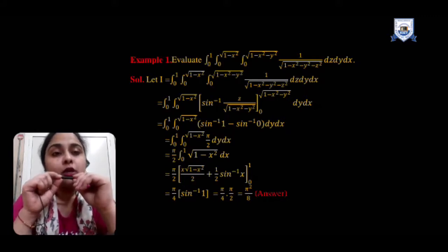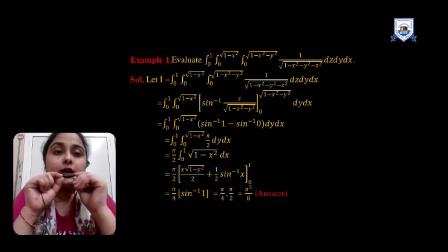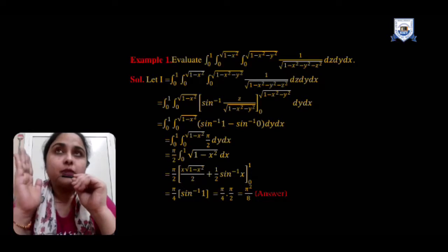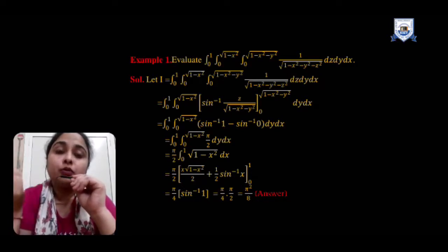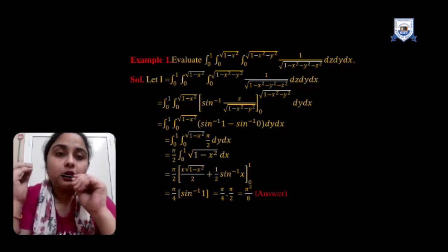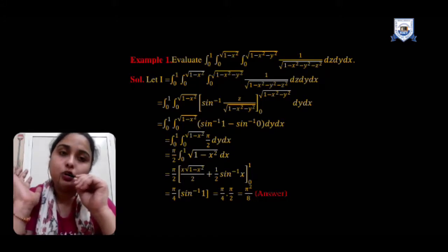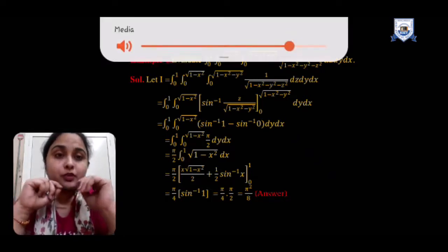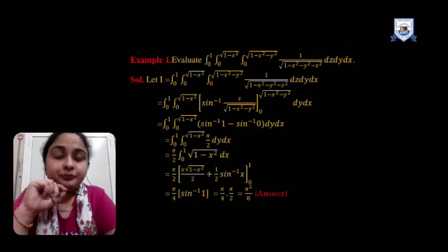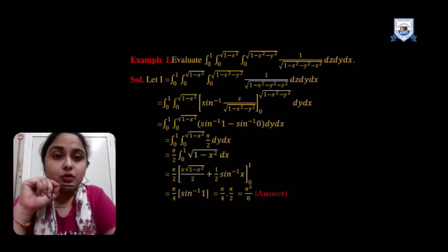Since π/2 is a constant, integrating with respect to y gives y. So π/2 can be taken common, and y is replaced by the upper and lower limits — giving π/2 times √(1 − x²) minus 0 — which is then integrated with respect to the last variable x over constant limits. There is a formula for √(a² − x²): its integral equals x√(a² − x²)/2 + (1/2)sin⁻¹(x/a).